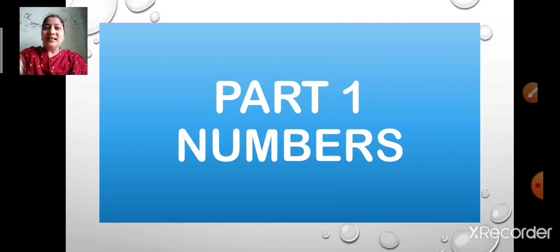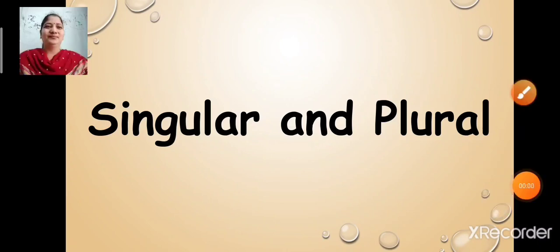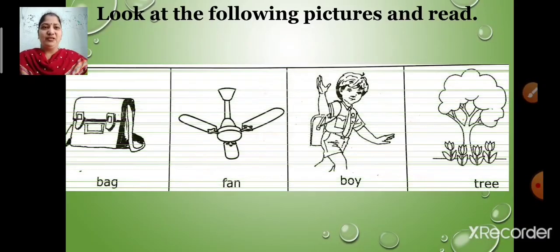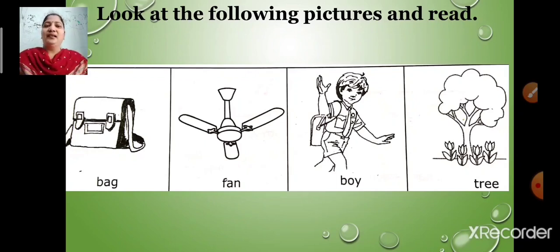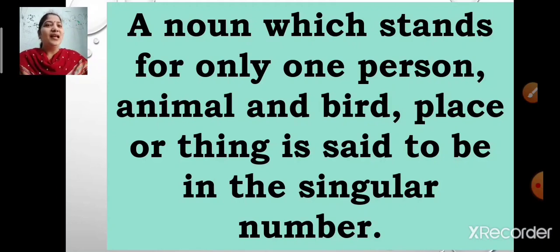Now, what are numbers? Numbers include singular and plural. Now children, look at the following pictures and read: bag, fan, boy, tree. They are known as nouns. There is only one bag, one fan, one boy and one tree. When we talk about one person, one animal, one place or one thing, the noun is said to be a singular noun. A noun which stands for only one person, animal and bird, place or thing is said to be in the singular number.